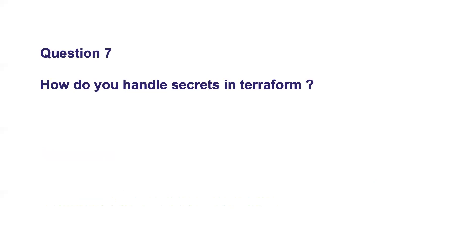How do you handle secrets in Terraform? Handling secrets is a key concept not just for Terraform but for CI/CD, Ansible, Kubernetes, and more. In Terraform, you can use a remote backend — instead of storing your state file on your laptop, store it in an S3 bucket and enforce strict IAM or RBAC policies, ensuring only authorized people can access it and read the secrets in the state. Enforcing proper role-based access control is the efficient way to handle secrets in Terraform.